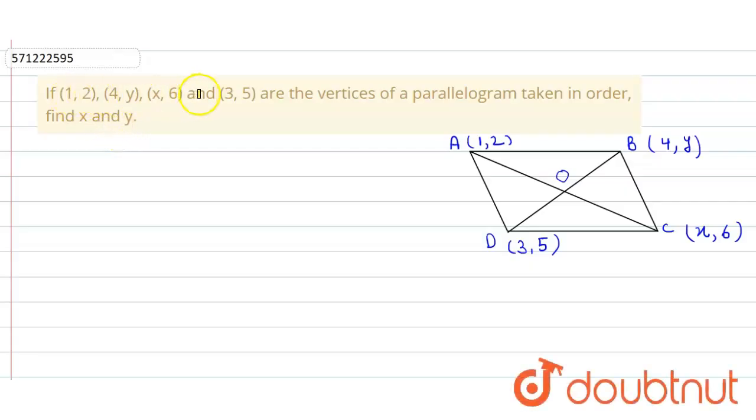In the given question, four coordinates are given and they are the vertices of the parallelogram taken in order. So then we have to find the value of x and y which are missing in the given coordinate as shown.